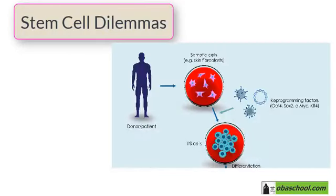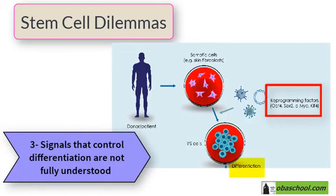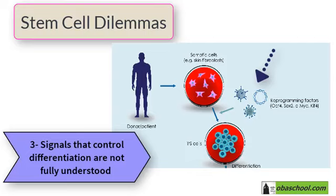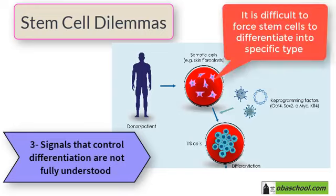Another problem with stem cells is that the signals that control cell differentiation are not fully understood. The factors or hormones that are added to stem cells in order to induce differentiation are not well understood even now, making it difficult to force stem cells to differentiate into the specific specialized cell needed.